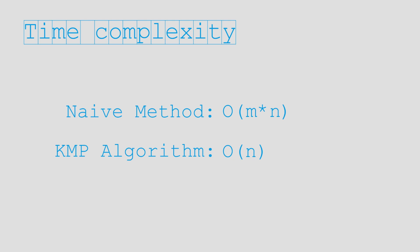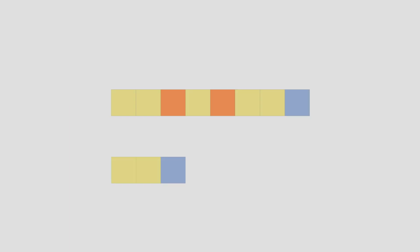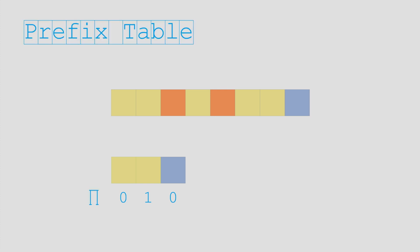So here comes the final question: how do we tell the pattern where to jump back to? Let's take a look at our color tape example again. The second color in the pattern is the same as the first one, so we put marker 1 under this color, suggesting that this is the same as the first color of the pattern. However, the first and third colors are not seen before within the pattern, so we put a 0 under them. These indexes make up a prefix table in the KMP algorithm.